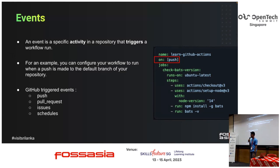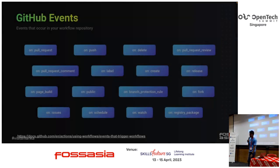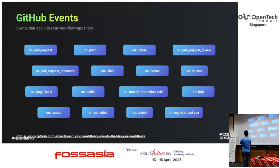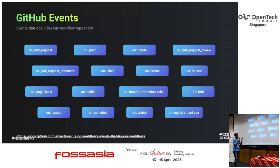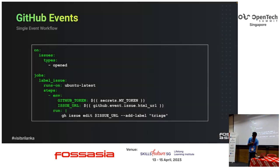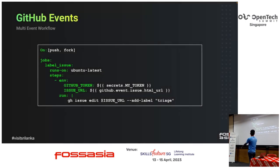There are hundreds of events that can occur in a repository. You can see a link where you can learn more about what events can trigger a GitHub Actions workflow. You can have a workflow triggered based on someone pushing code, someone making a fork, or you can even run cron jobs. There are two types of GitHub events: a single event — triggered only when someone opens an issue — and multi-event workflows, where actions run when someone pushes or forks the repository.